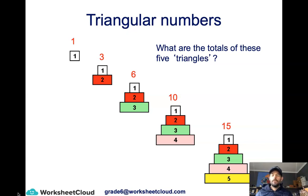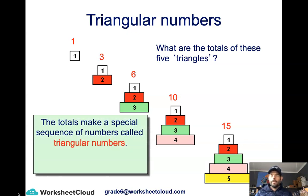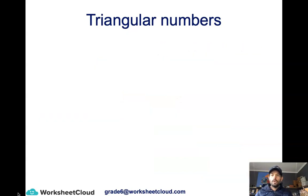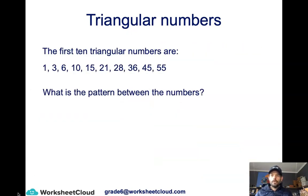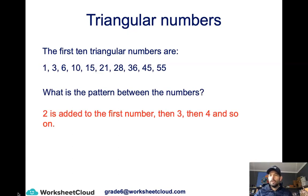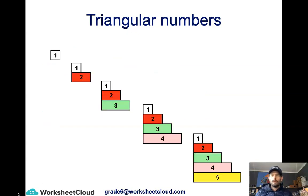That's how many dots you'd use to make each triangle. You can also see that triangular numbers increase by one more each time. The difference between 1 and 3 is 2; between 3 and 6 is 3; between 6 and 10 is 4, then 5, then 6, then 7, then 8, then 9, then 10. It carries on increasing by one more each time. That's triangular numbers.